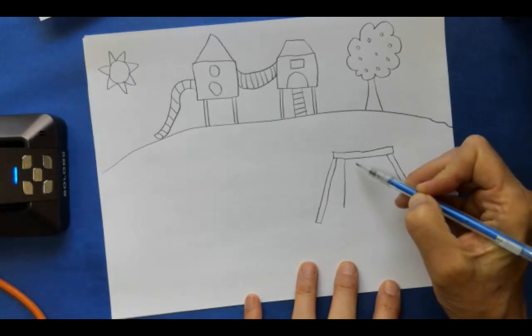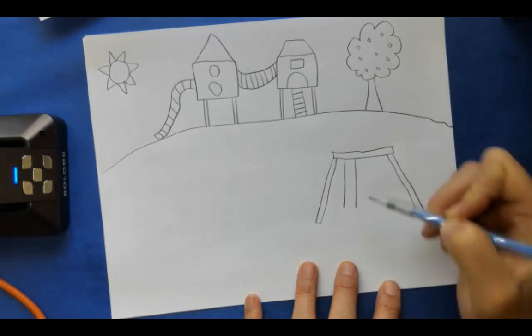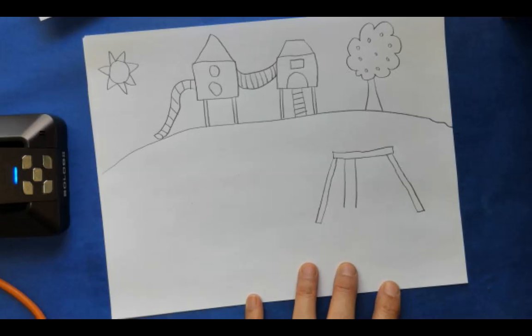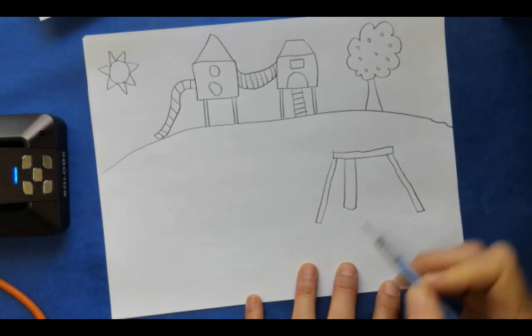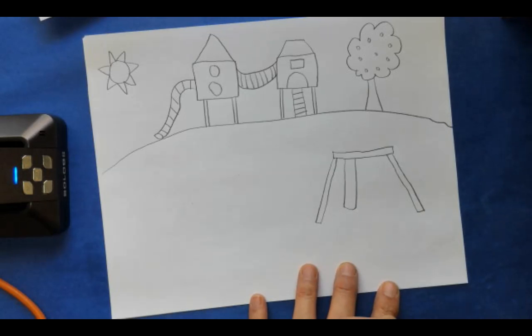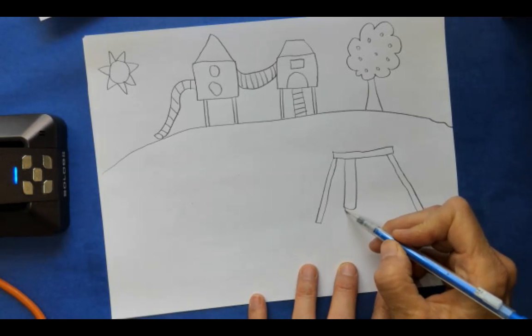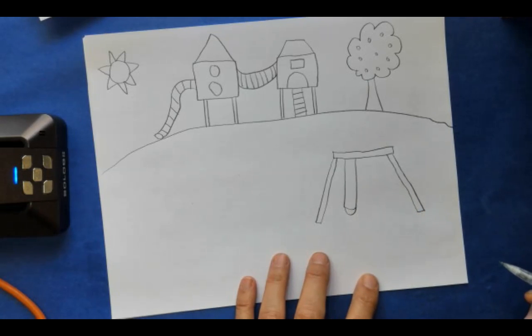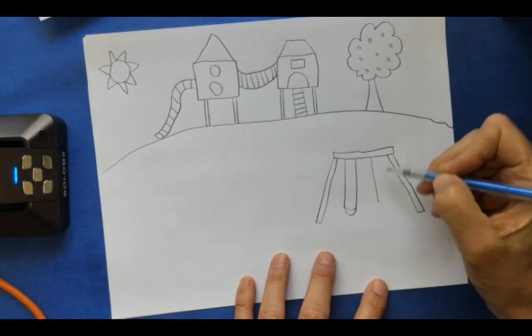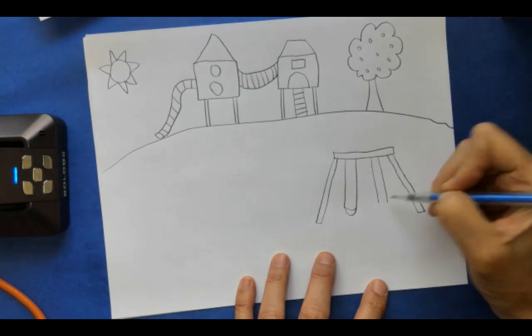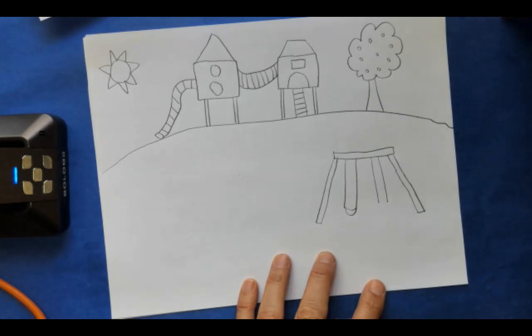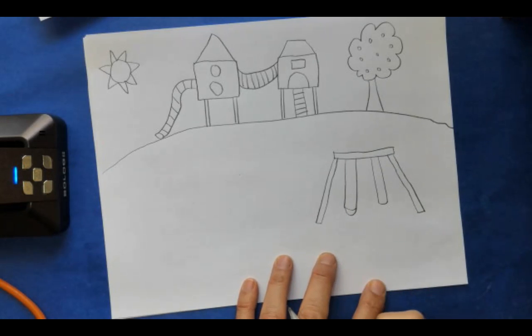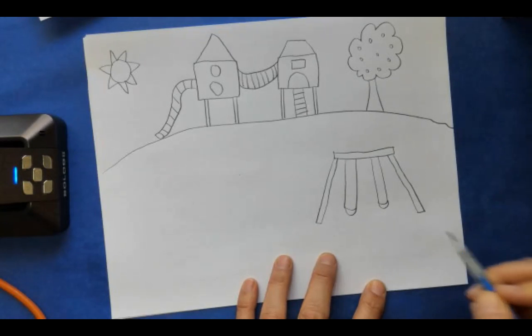To put swings we make two lines going down side by side. Then we're going to add one smile. Then underneath it we add another smile. There we go. We have one swing. Now let's add another swing. Let's put two lines down. We can add a smile. Then we add another smile. Look at that, we've got a swing. That was easy.